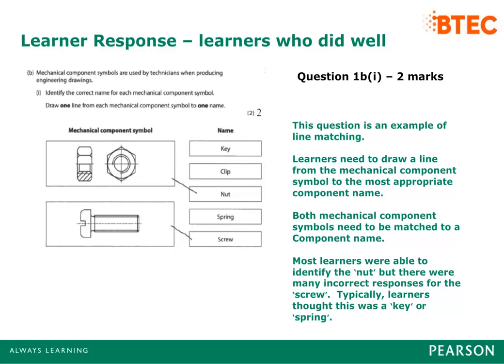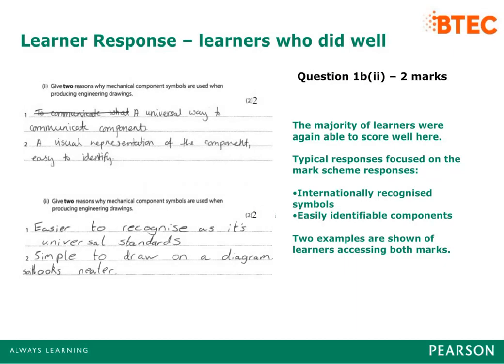Question 1b is an example of line matching. Learners need to draw a line from the mechanical component symbol to the most appropriate component name. Both mechanical component symbols need to be matched to a component name. Most learners were able to identify the nut, but there were many incorrect responses for the screw — typically learners thought this was a key or spring. The majority of learners were able to score reasonably well, as many could give simple reasons for the use of mechanical component symbols, with typical correct responses centred around internationally recognised symbols and easily identifiable components.